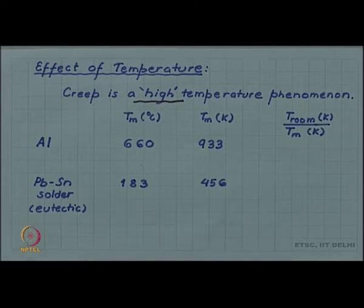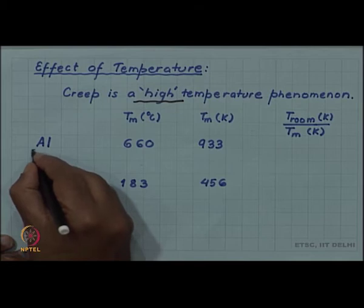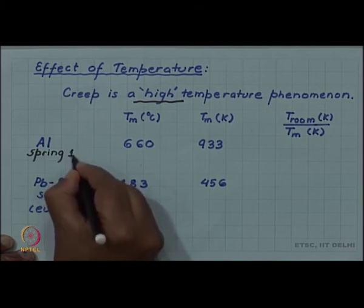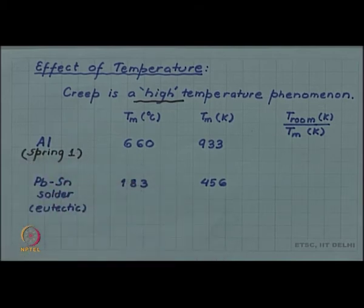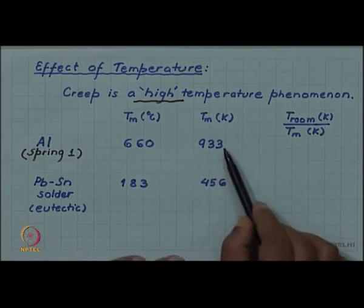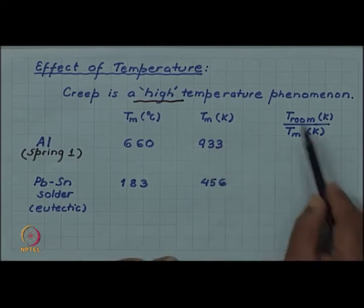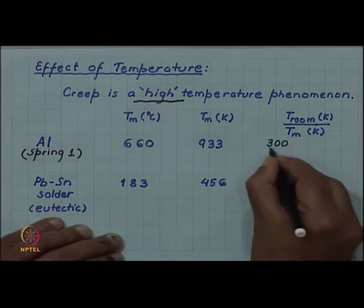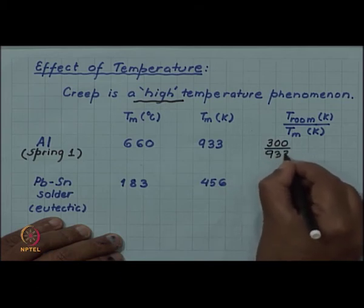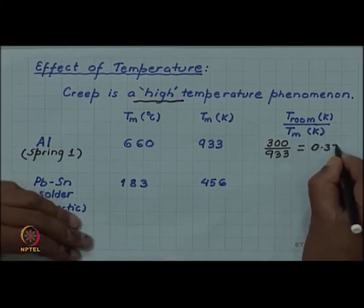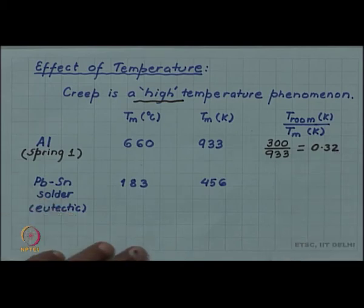So, one of the springs was made of aluminium. So, the spring which did not deform, spring 1, the non-deforming spring, was made of aluminium and its melting point is 660 degrees Celsius which converts to 933 Kelvin. And if we take the ratio of room temperature which let us take as 300 Kelvin, you get a ratio of about 0.32.